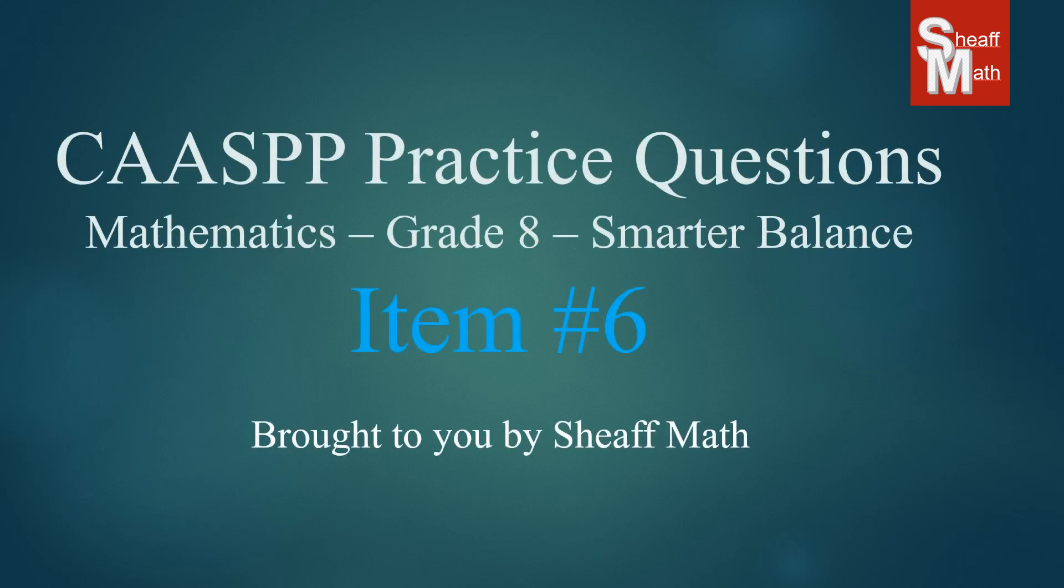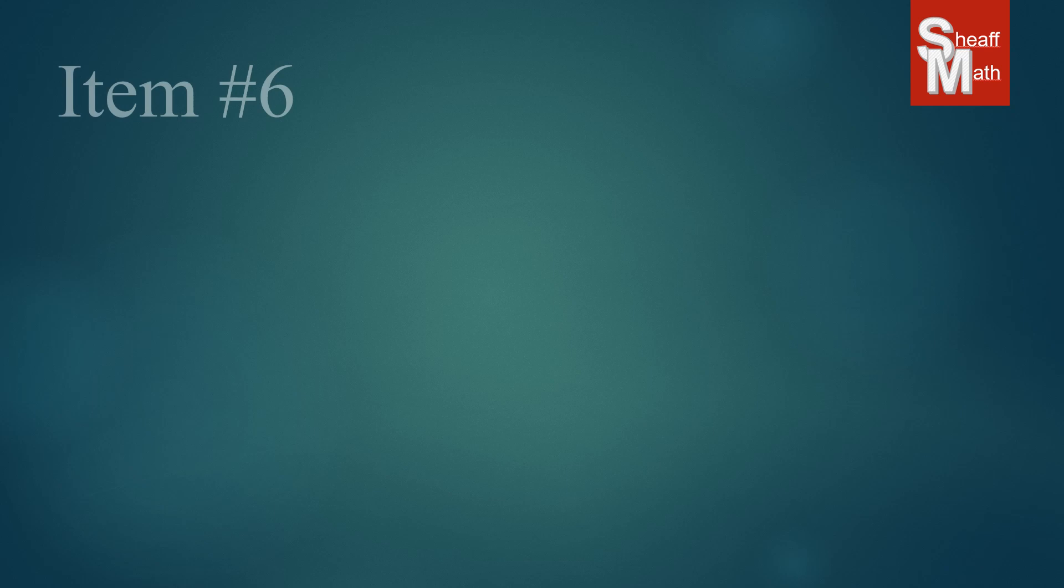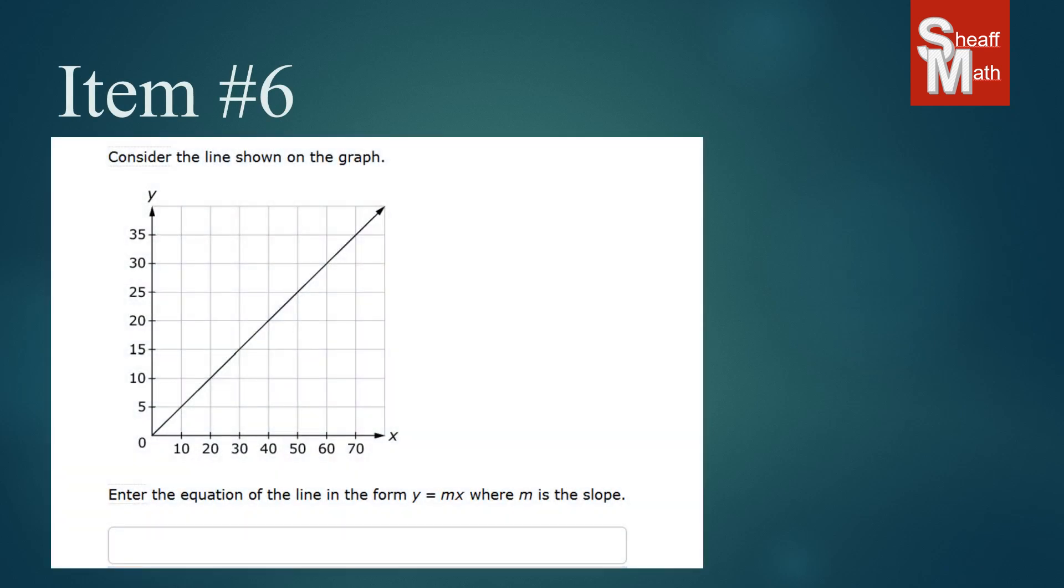CASP practice test item number six. So in item number six what we have here is a graph with a line on it and it asks us to consider that line on the graph and to write an equation in the form y equals mx where m is the slope.